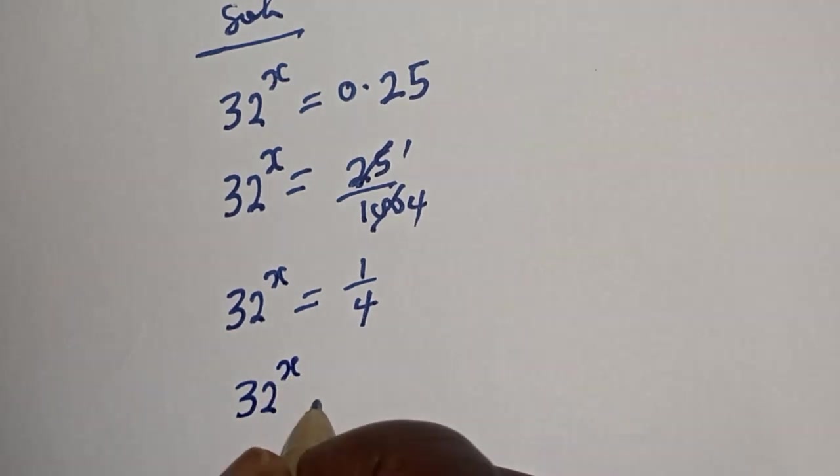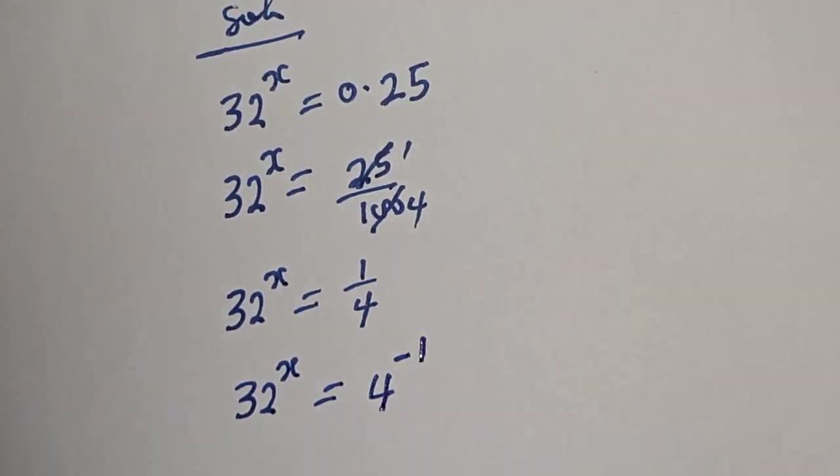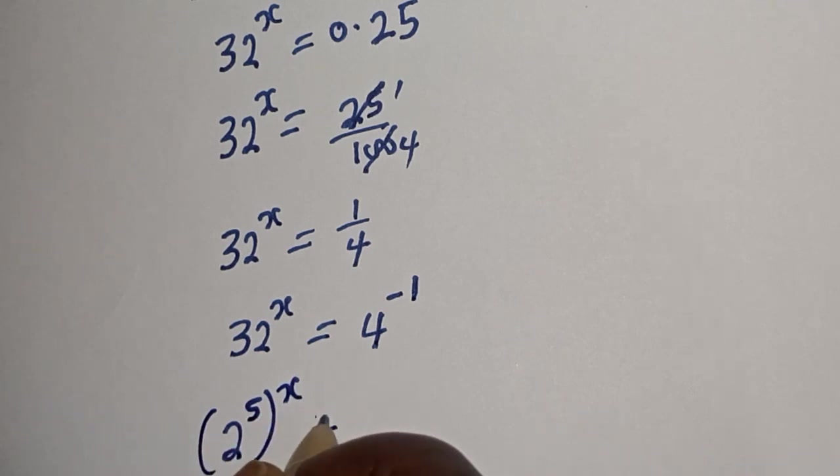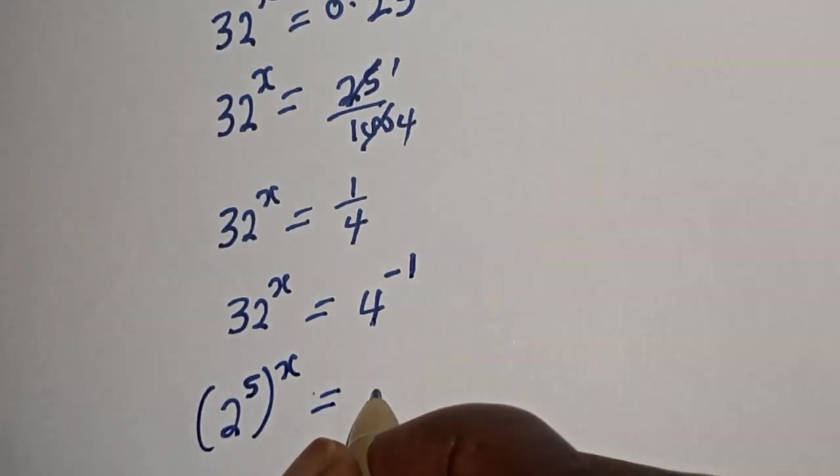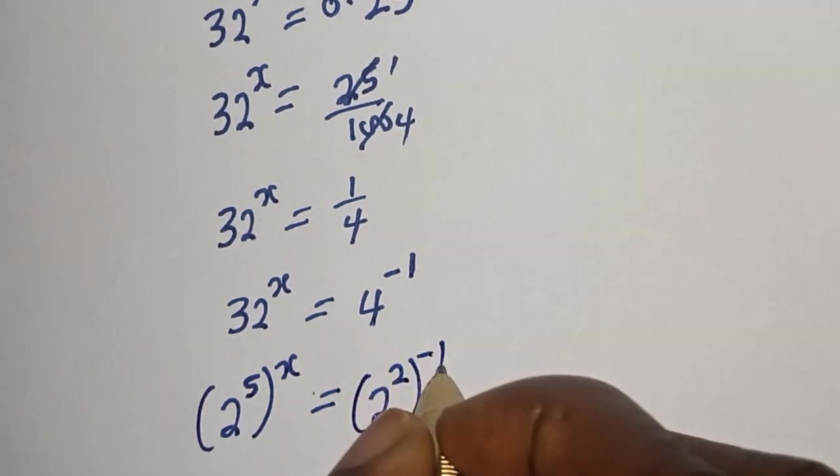32 raised to power s equals 4 raised to power minus 1. Let's see, 32 is 2 raised to power 5, to the power of s. This equals 4, which can be written as 2 raised to power 2, raised to power minus 1.